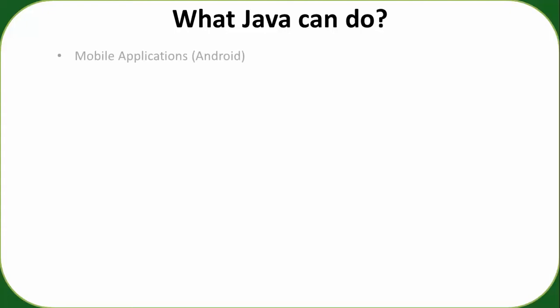What can you do with Java? You can develop Android applications — Android is programmed in Java. You can also use Kotlin and many other languages, but Java is widely used in Android development. You can make standalone desktop applications, management software, and many desktop applications. You can also make web applications and server-side applications using servlets, Hibernate, and many other tools.